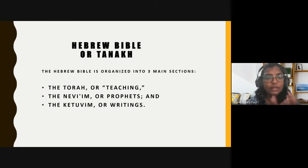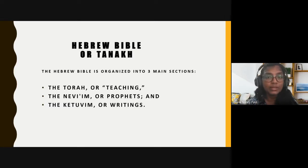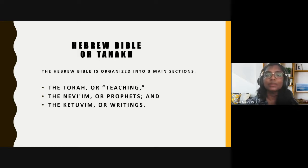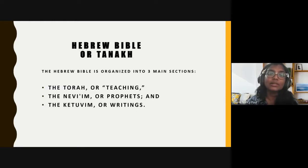The Torah contains narratives combined with rules and instructions in the first five books: Genesis, Exodus, Leviticus, Numbers, and Deuteronomy. The books in Nevim are categorized among either the former prophets, which contains accounts about major Hebrew persons and includes Joshua, the first and second Samuel, and the first and second Kings.